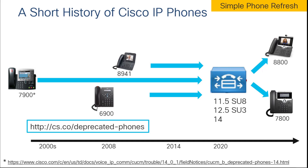This feature is very nice because it can take all of the features that are on your phone — such as speed dials, BLF, and multiple lines — and migrate them all in their entirety over to the 78 and 88. There is a link to the deprecated phones, which is a forward-looking release note about what will be deprecated in CUCM 14, so you can start preparing now with CUCM 11.5 SU8 or 12.5 SU3.